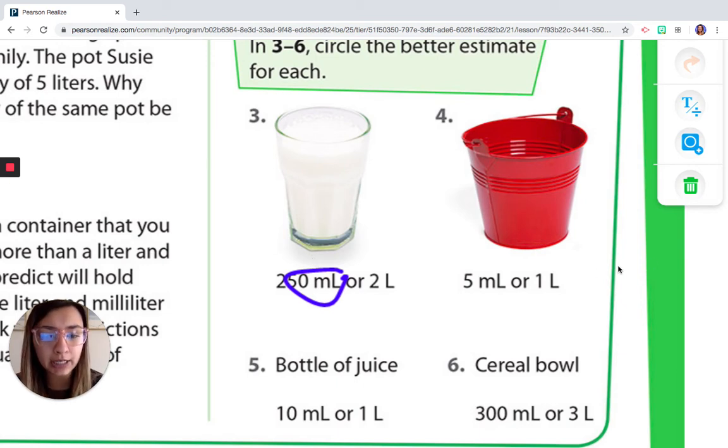So here, I have a, looks like a bucket, and it says five milliliters or one liter. Now, five milliliters is five of those little dropper tubes or one liter, which is about a big water bottle or a soda bottle that you share with your family.